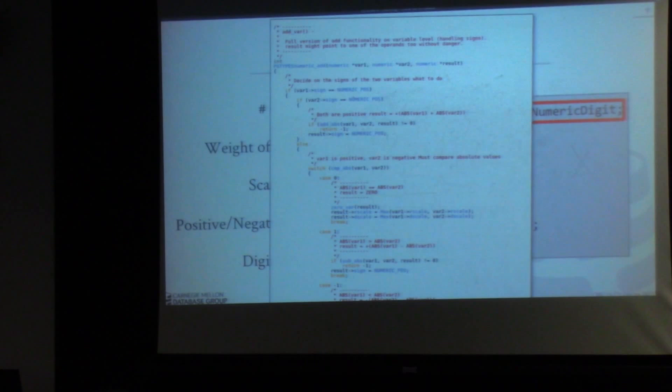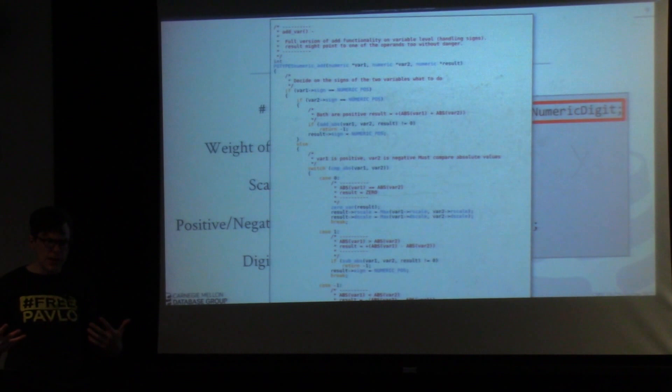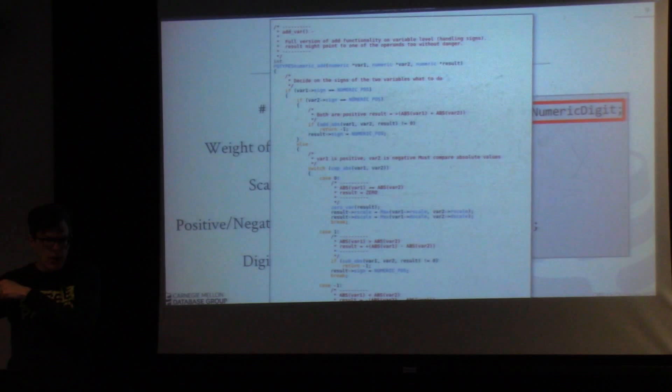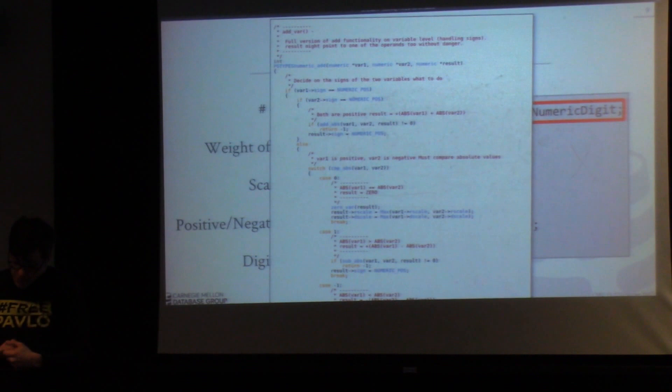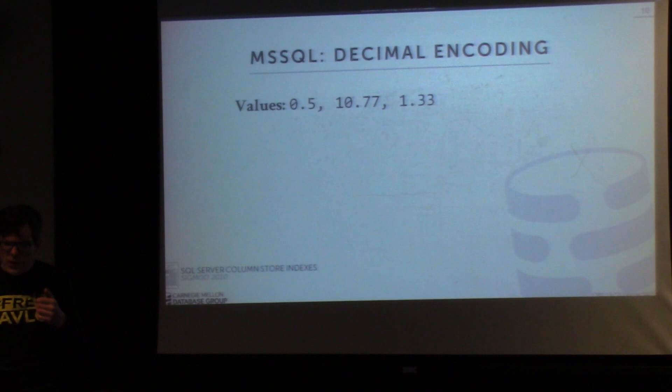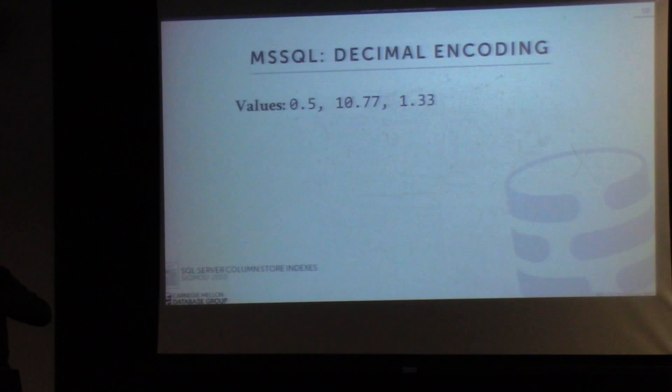You would use numeric types anytime you're dealing with money — because you don't want to lose money — and anytime you're dealing with scientific data where you want exact answers. One big problem with native types: if you load your database on one machine and compute an answer, then run that same query on another machine with the same data, it may come up with a slightly different answer. That's obviously bad. So anytime you don't want rounding errors, use a numeric type.